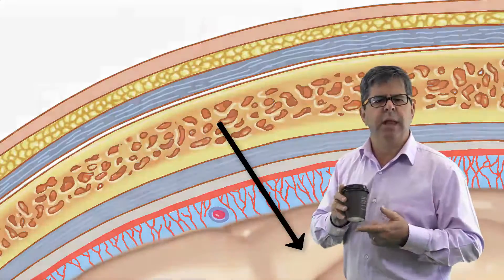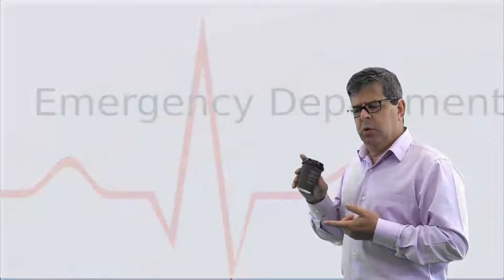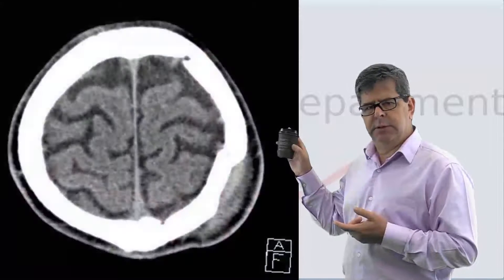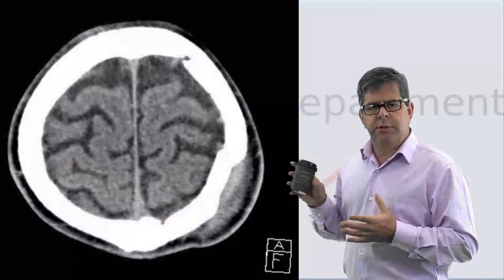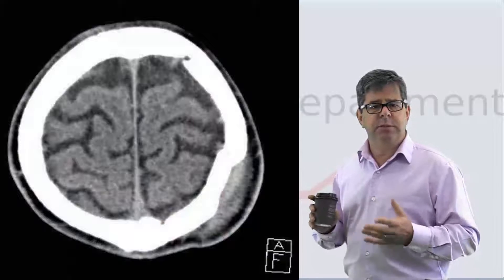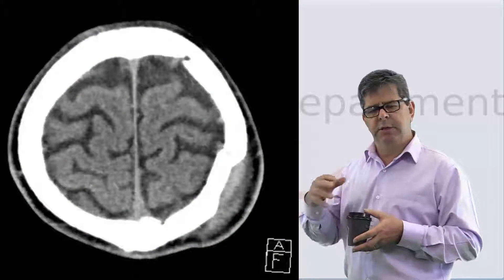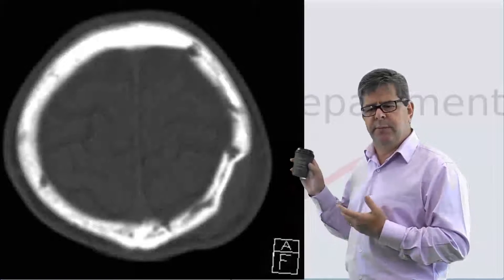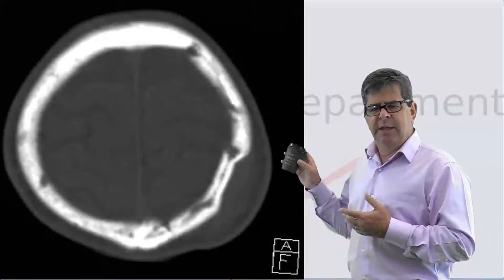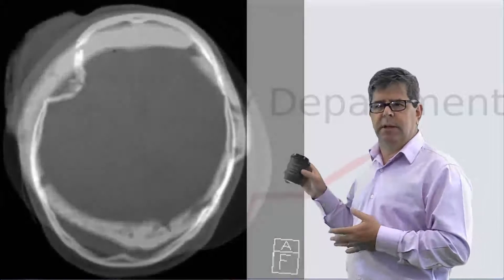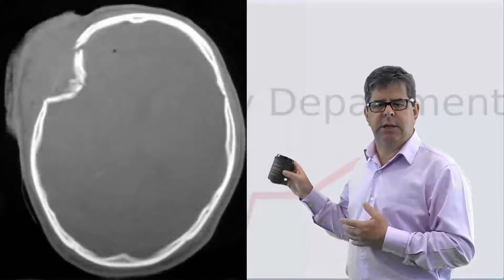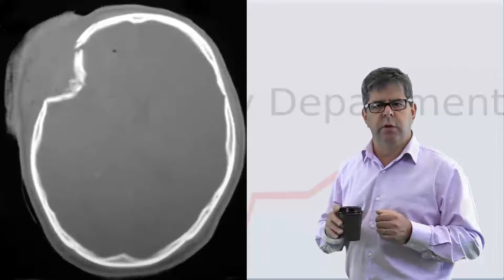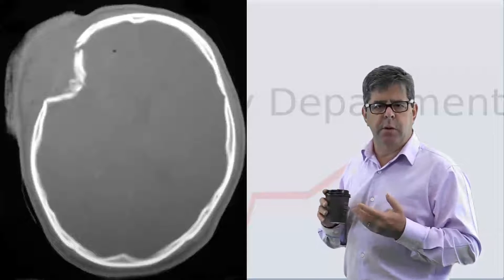Looking at skull fractures, it's very important to know that sometimes skull fractures can be missed if you don't change the window to a bony window. As you can see from this appearance, it's a little bit subtle. Sometimes, like here, it's not subtle, but it is easier to make sure that you look at it on a bony window.